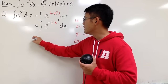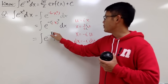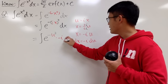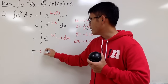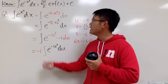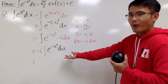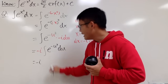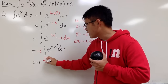Coming back to the integral, with the substitution the input becomes u squared, and dx is replaced by negative i du. So we get the integral of e to the negative u squared times negative i du. We can bring the negative i out front, giving negative i times the integral of e to the negative u squared du — and this is just the standard error function form, but with u.